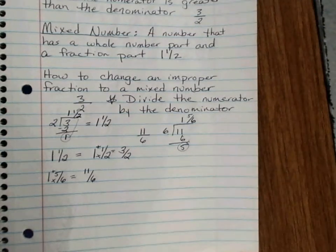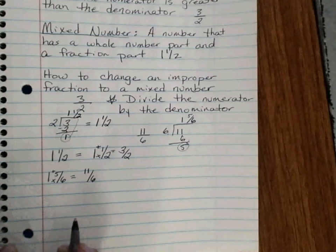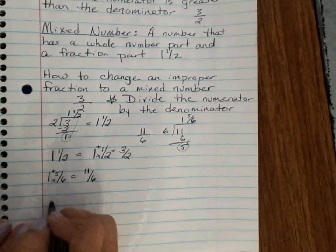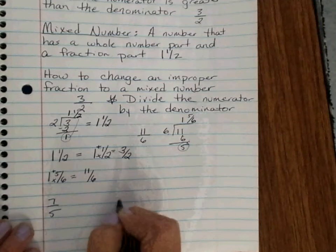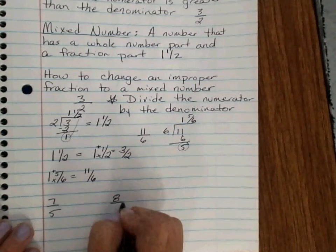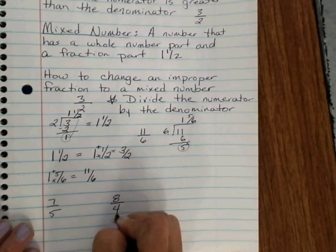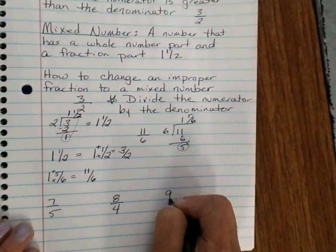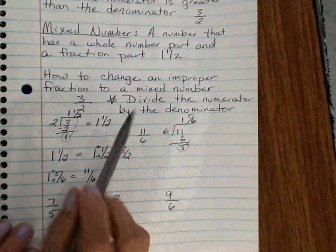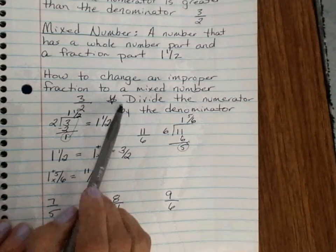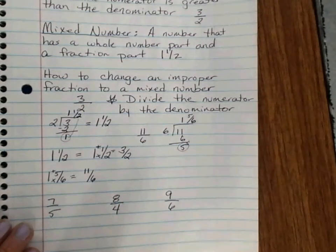I'm going to give you 3 improper fractions to try and turn into mixed numbers. Try 7 over 5, 8 over 4, and 9 over 6. Remember, go back up to here. Divide the numerator by the denominator.